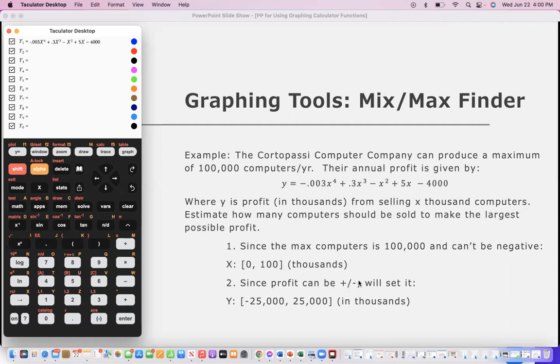And also as far as my window goes, since the max number of computers is a hundred thousand, and x is in the thousands we can't make more than that, I'm going to, and of course we can't make negative computers. I'm going to set my x window to go from zero to a hundred, and since the profit can be positive or negative we're just going to put this at negative twenty five thousand to positive twenty five thousand. This is in thousands so we're really looking at millions, you know three more zeros added onto that. When we graph this, so go ahead and set your window to that, you may want to pause, and then we're going to hit graph.